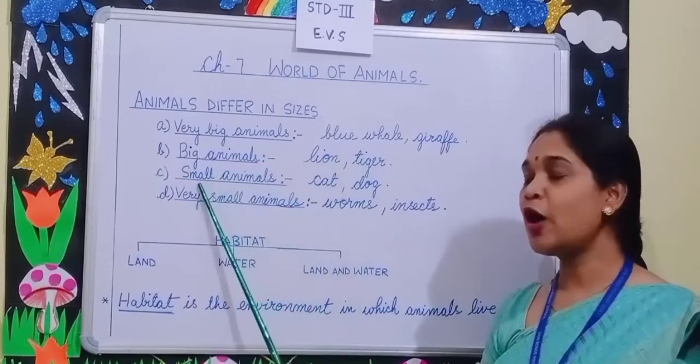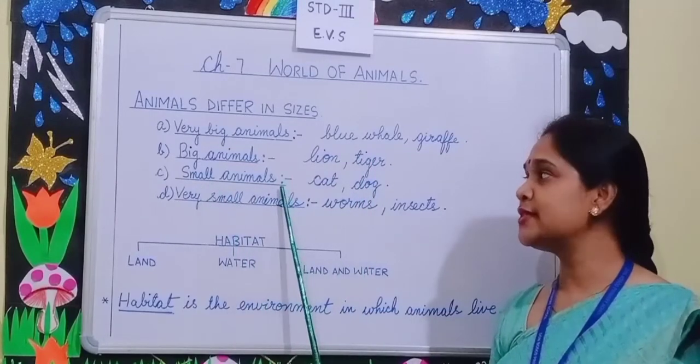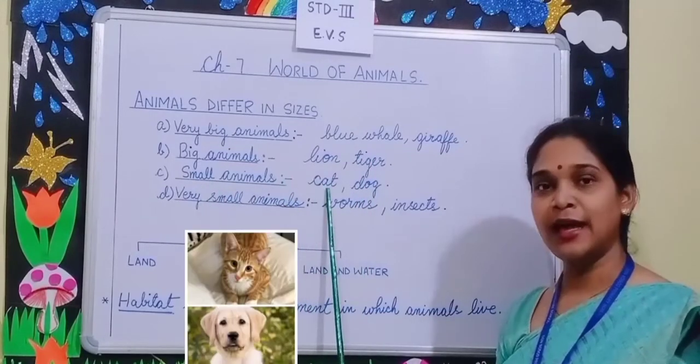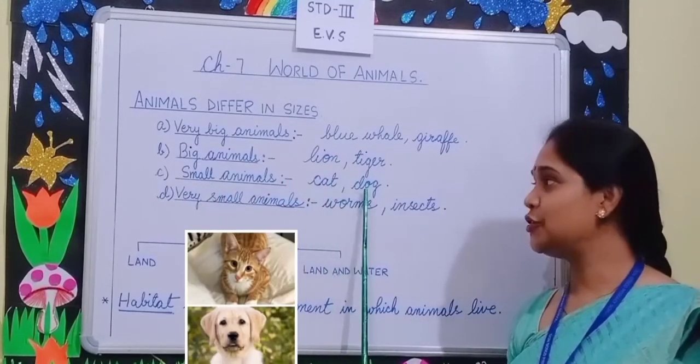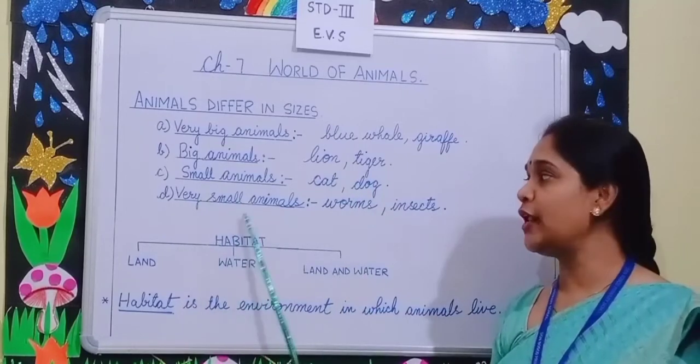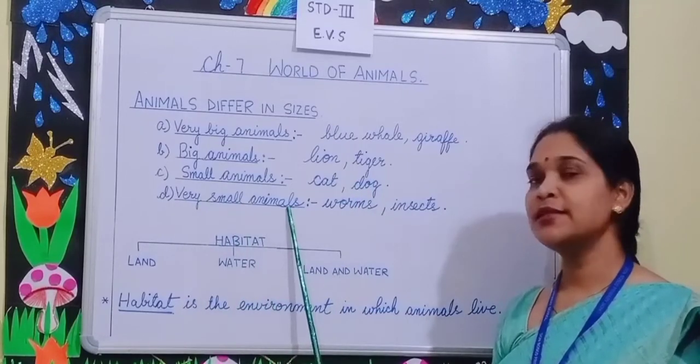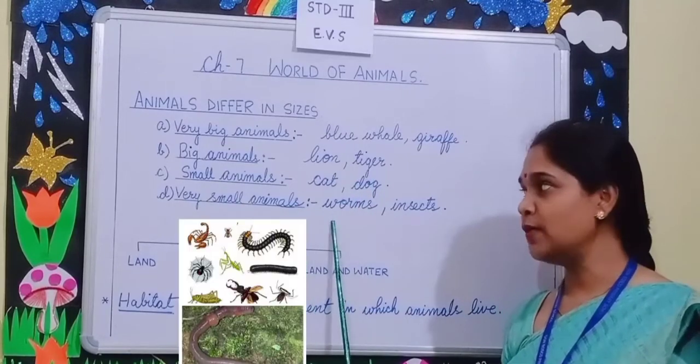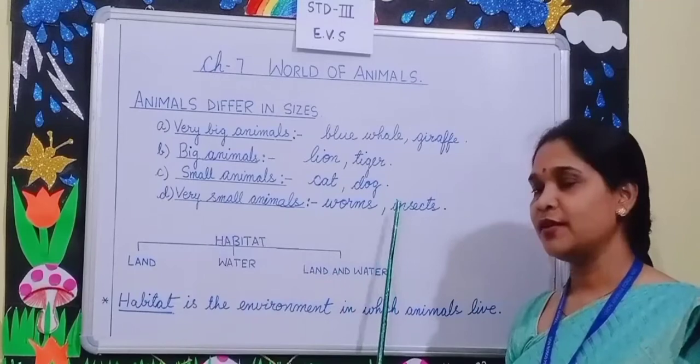Small animals are cat and dog. Very small animals are worms and insects.